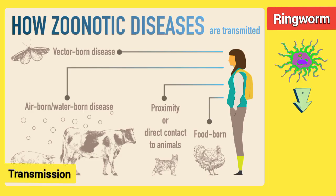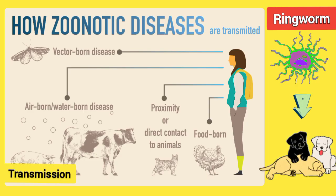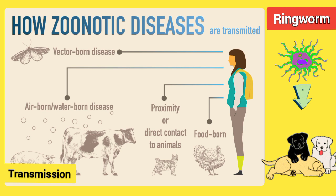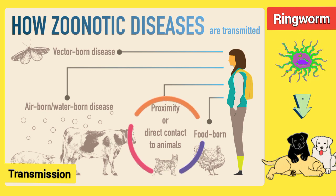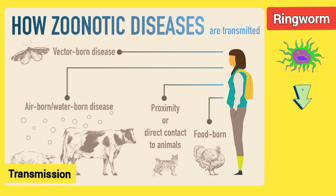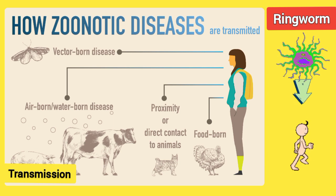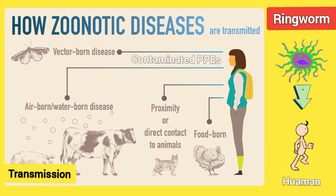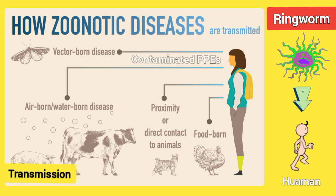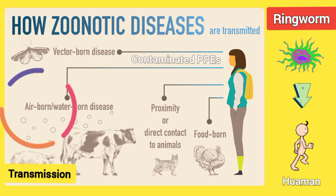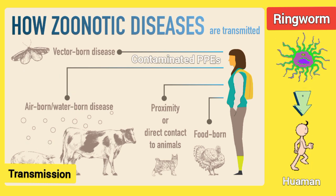Transmission: Dermatophytosis in dogs is highly contagious and can be transmitted through direct contact with an infected animal or contaminated objects such as bedding, brushes, or combs. The infection can also spread through the air in the form of fungal spores.